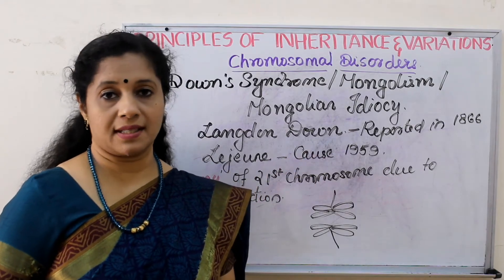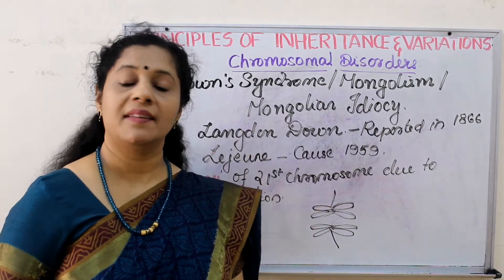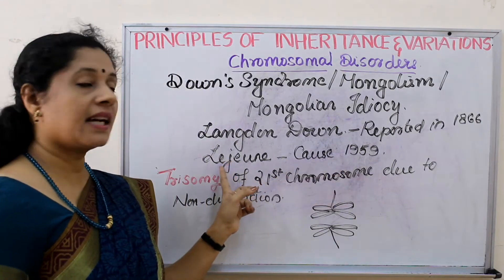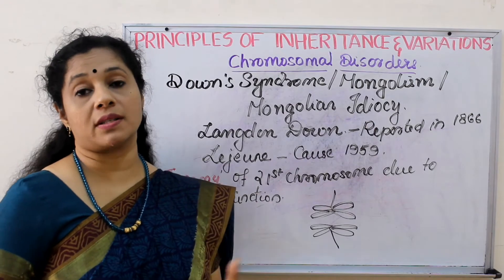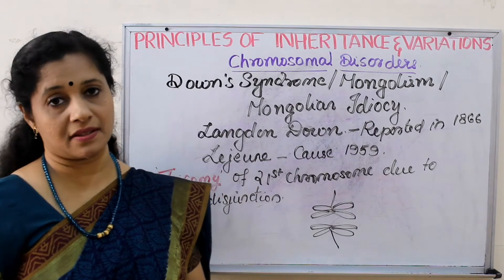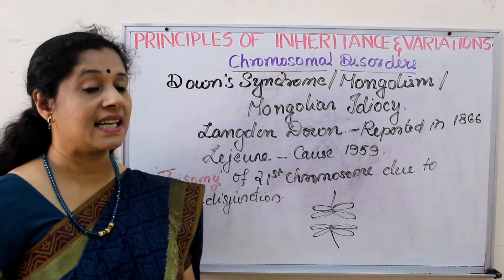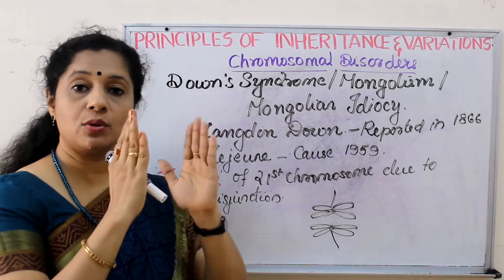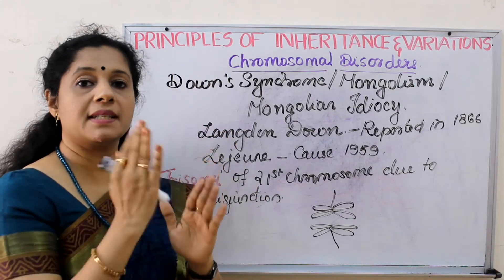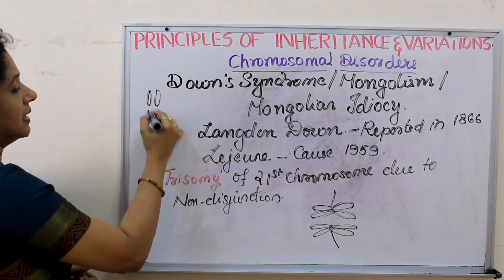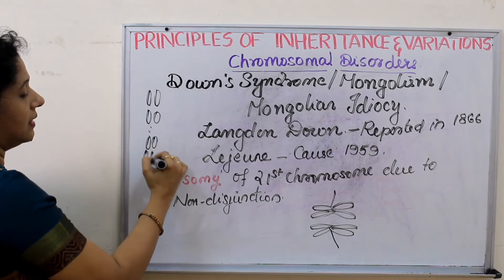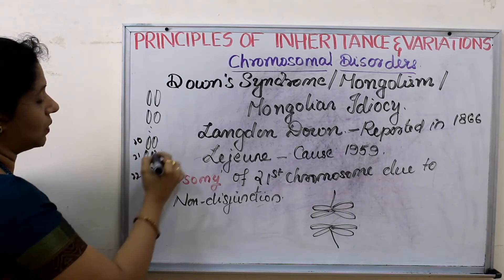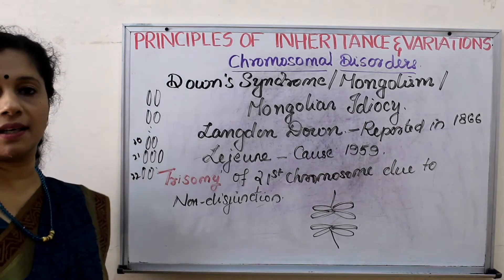Though he reported it, he did not know what the reason was — in 1866, the time of Mendel, they had no idea about chromosomes, DNA, or genes. Then in 1959, another scientist called Lejeune and his co-workers explained the cause of this disease. The cause is trisomy of the 21st chromosome — that means every chromosome we have 2 copies of, but when it comes to the 21st, there are 3 copies. So among chromosomes 1, 2... up to 21 and 22, the 21st has 3 copies instead of 2.